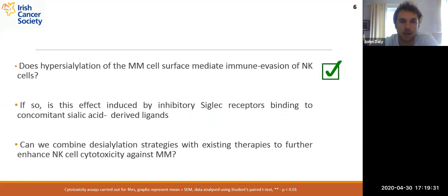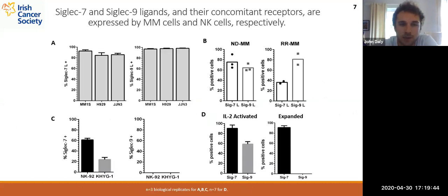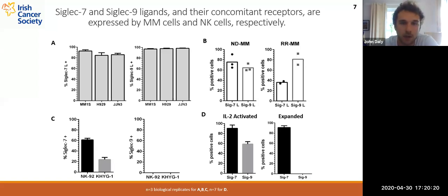We confirmed that the hypersialylated myeloma cell surface does mediate immune evasion of NK cells, and then wanted to know whether this was in a Siglec-dependent manner. We screened M1S, H929, and JGN3 myeloma cells for Siglec-7 and Siglec-9 ligand expression using recombinant chimeras. We saw strong expression of both ligands, and when using patient samples — myeloma cells isolated from bone marrow aspirates of affected patients — we also observed ligand expression. We also measured Siglec-7 and Siglec-9 expression on NK cell lines and primary NK cells, finding that Siglec-7 was strongly expressed in IL-2-activated and expanded NK cells, whereas Siglec-9 was expressed only by a subset of IL-2-activated NK cells and was not expressed by expanded NK cells.